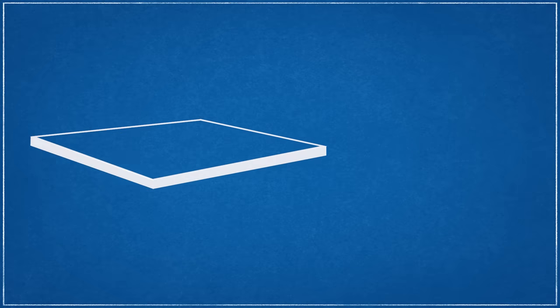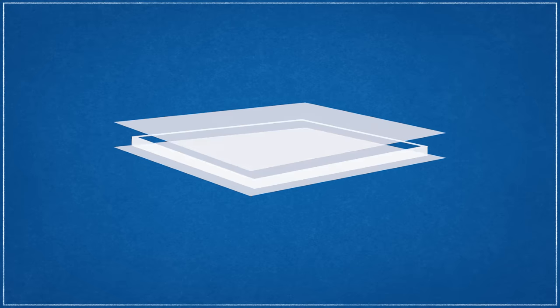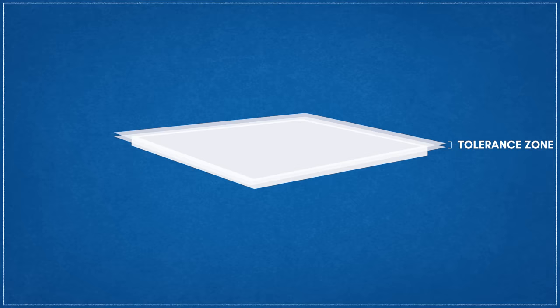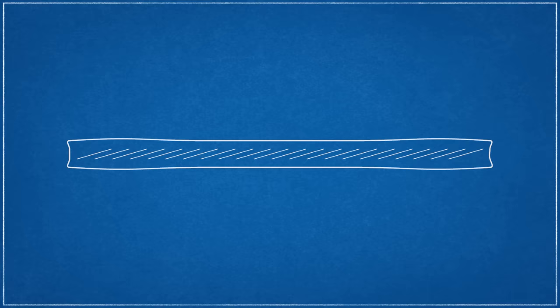If we take a surface and sandwich it between two imaginary parallel planes, the gap between the planes that encompass the surface is known as a tolerance zone. The distance between planes in this tolerance zone is how flatness is specified. The smaller this distance, the flatter the specification. If a surface's irregularities can't fit within the tolerance zone, it's not flat enough for the specification.